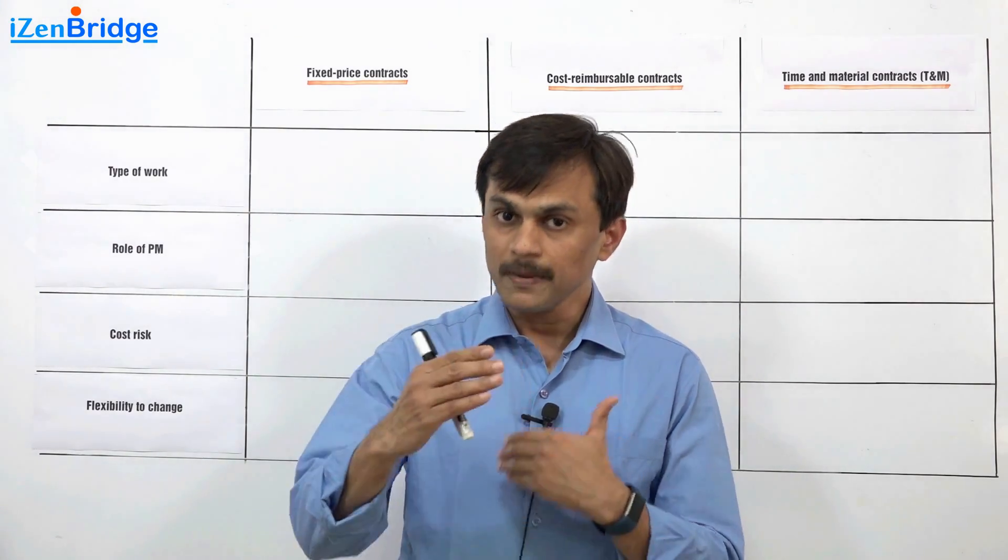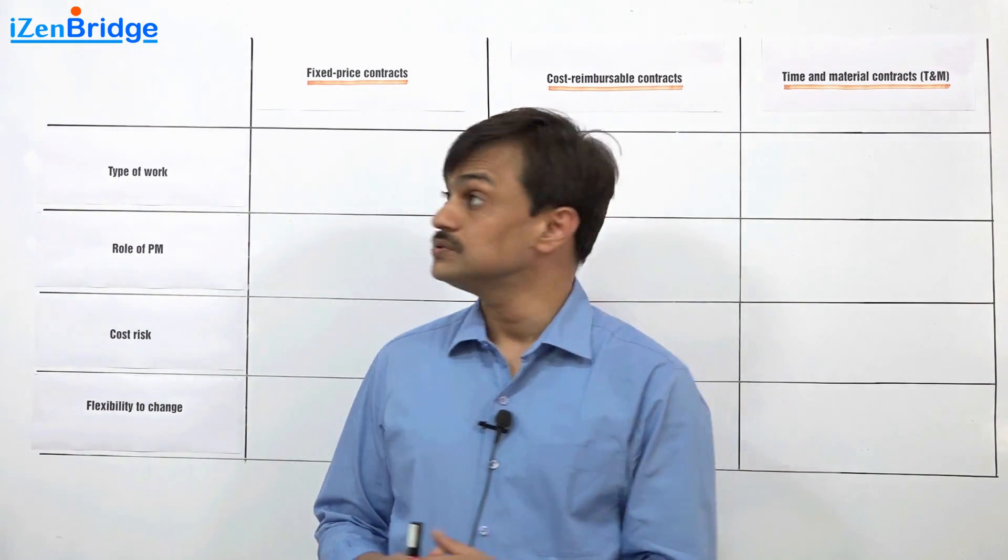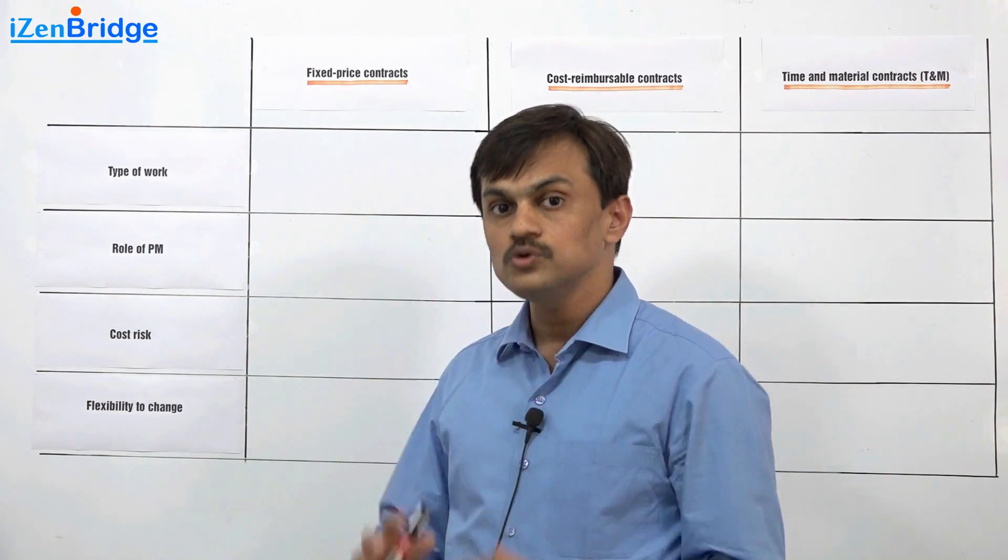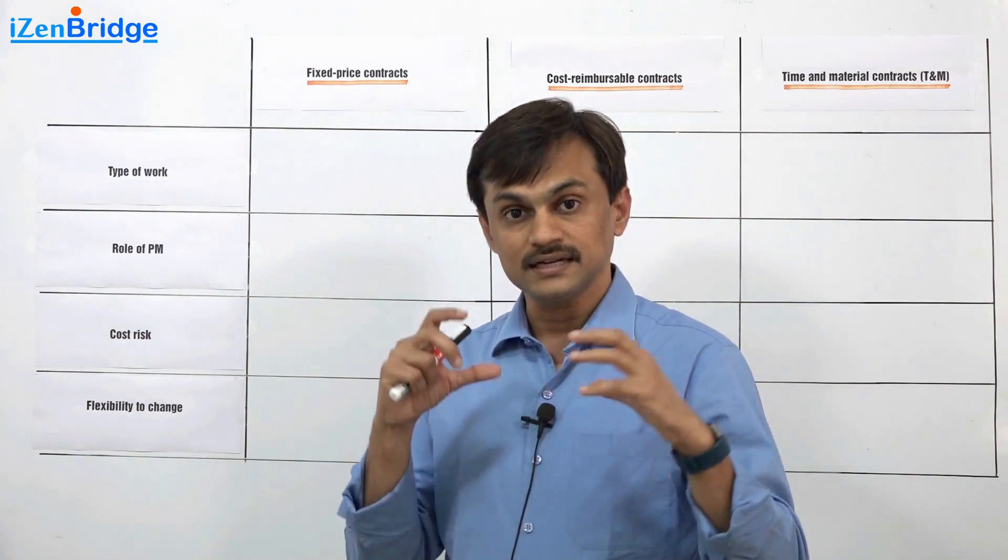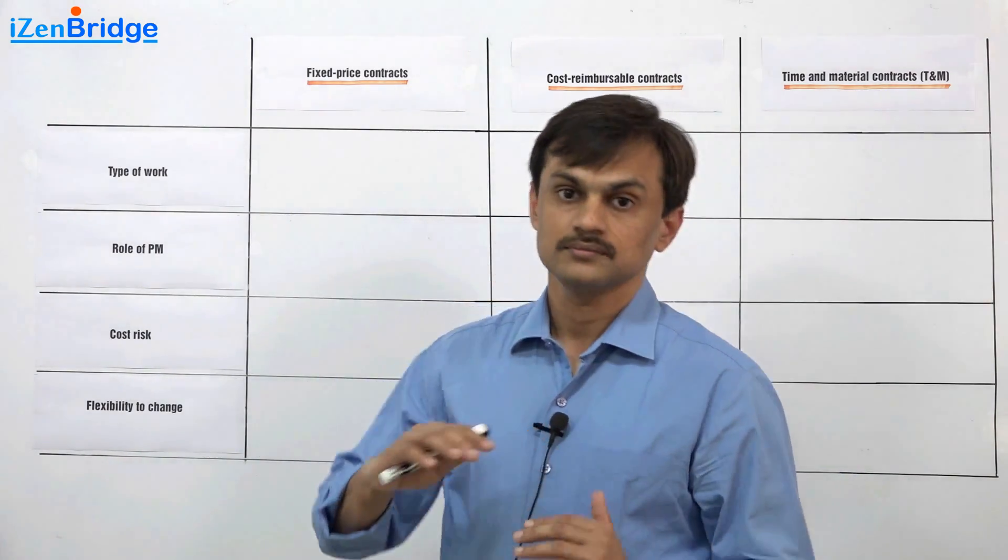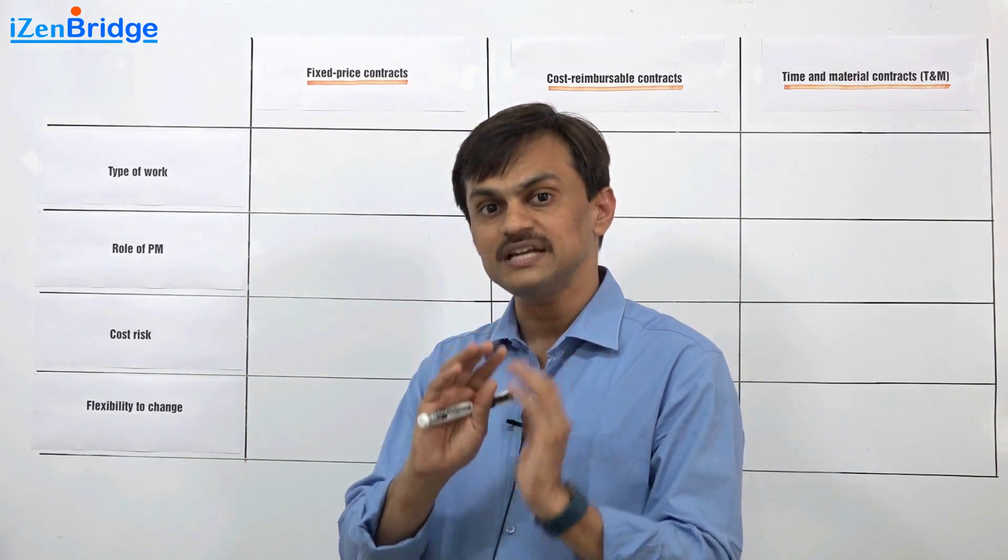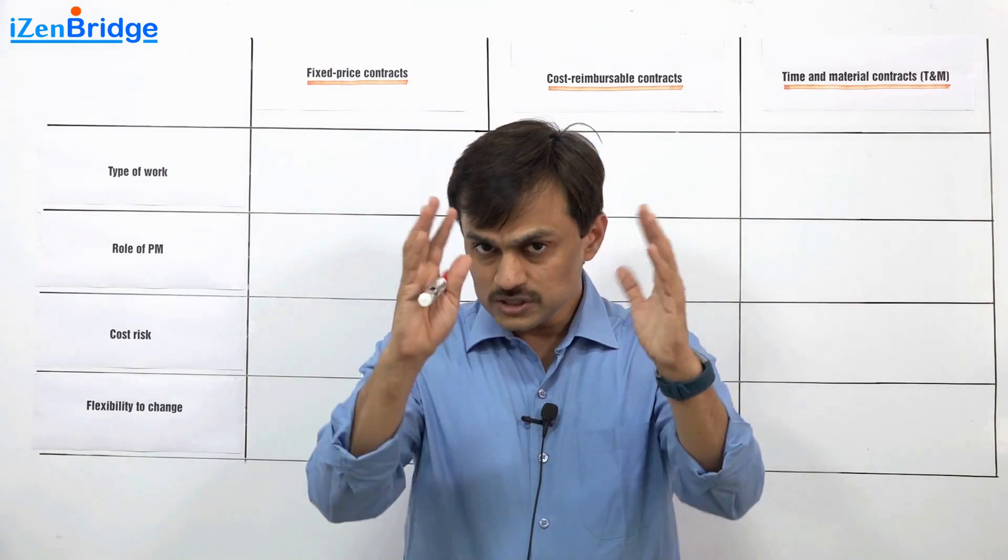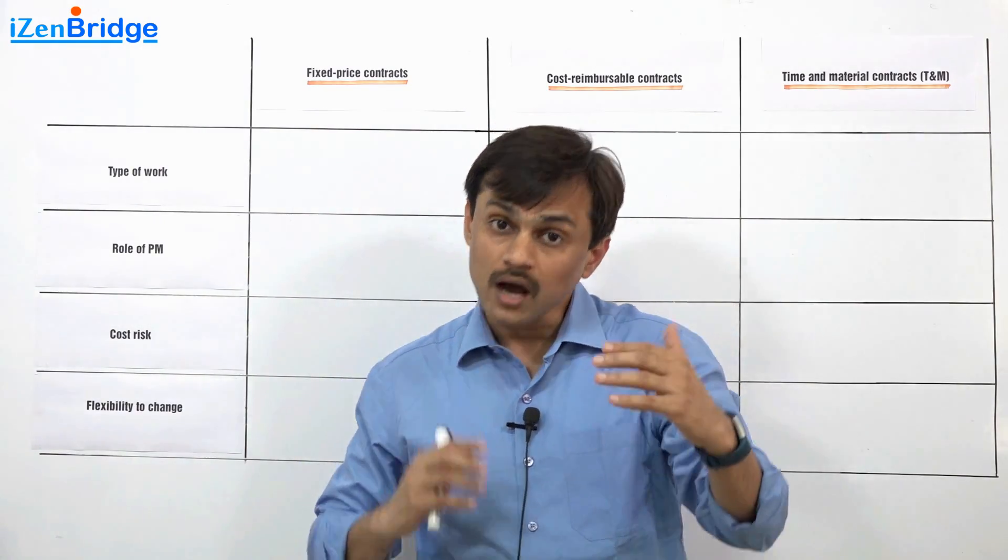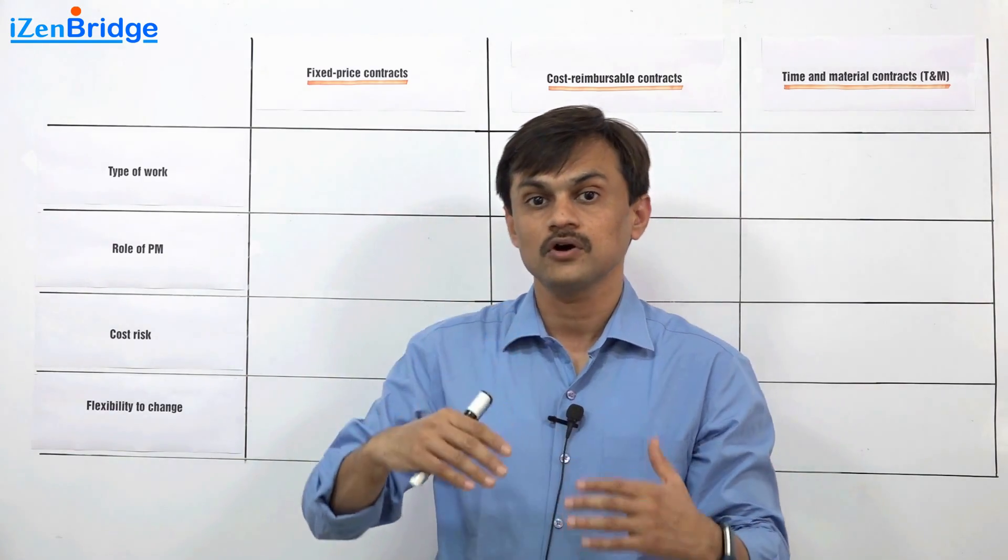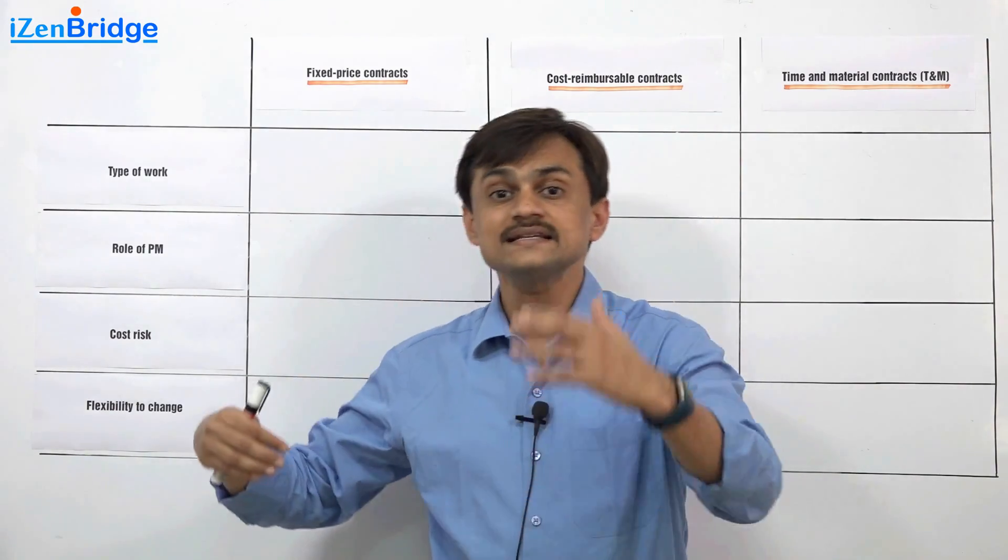Both buyer and seller can get into a fixed price contract where there is a fair amount of clarity in the type of work which has to be performed. Even the way of doing work, known hows, are also pretty much clear. Say I want to make something, so maybe the scope is clear first thing.